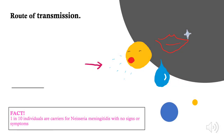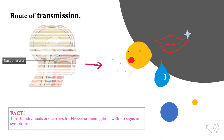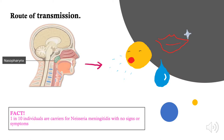Neisseria meningitidis, also known as meningococcus, is a human pathogen that can cause a variety of illnesses such as meningococcal disease and disseminated meningococcemia. The bacteria is found in the back of the nose and throat and is transmitted via close contact over a long period of time through saliva and respiratory secretions.